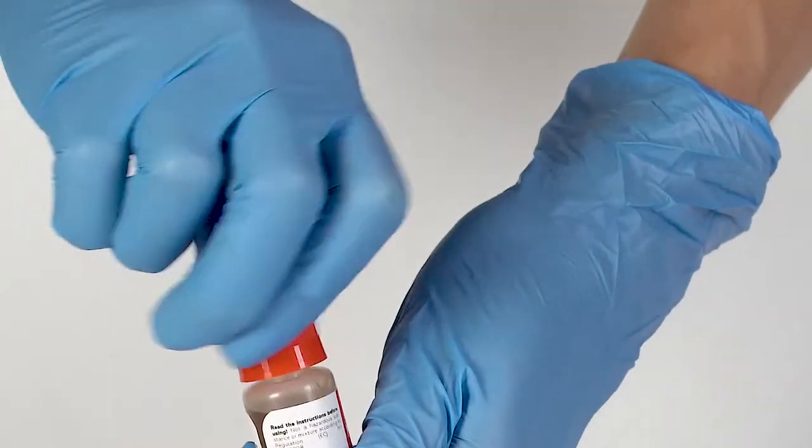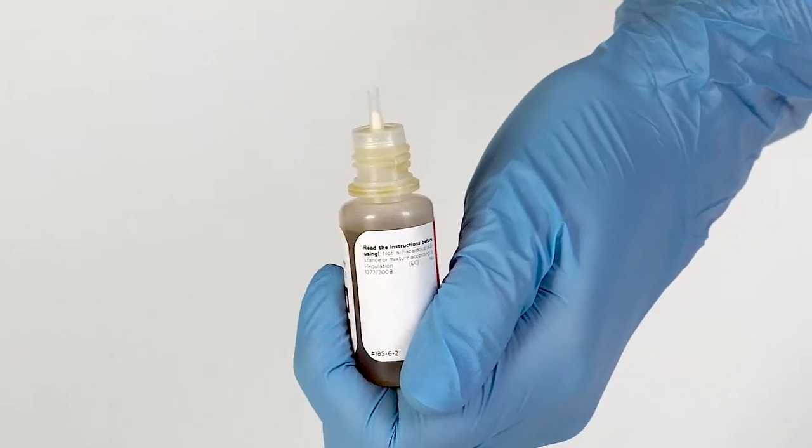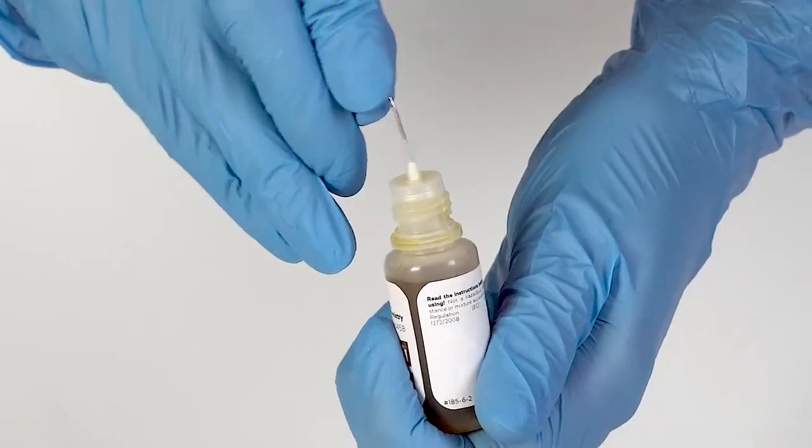To open a bottle containing a reagent, push the cap down and turn it. Pierce the bottle nozzle with an unbent paper clip.